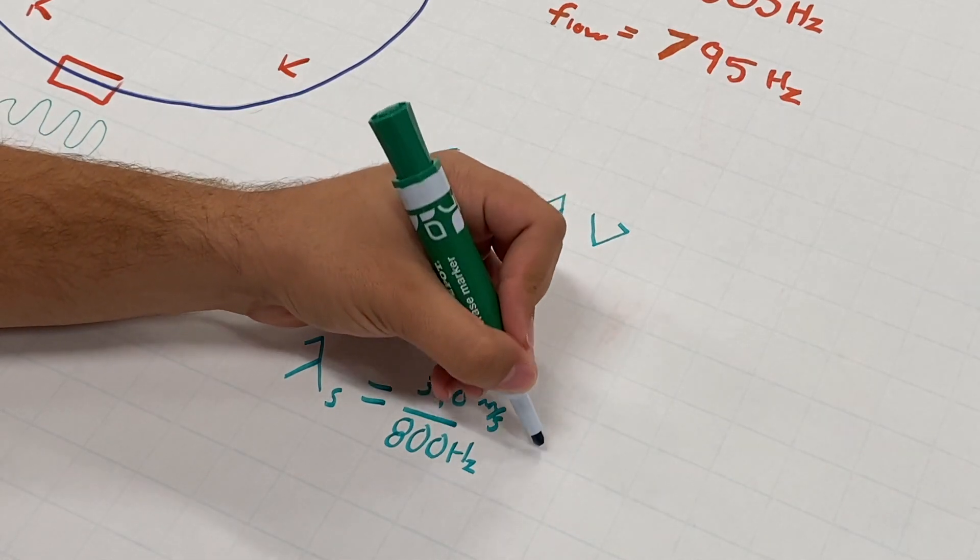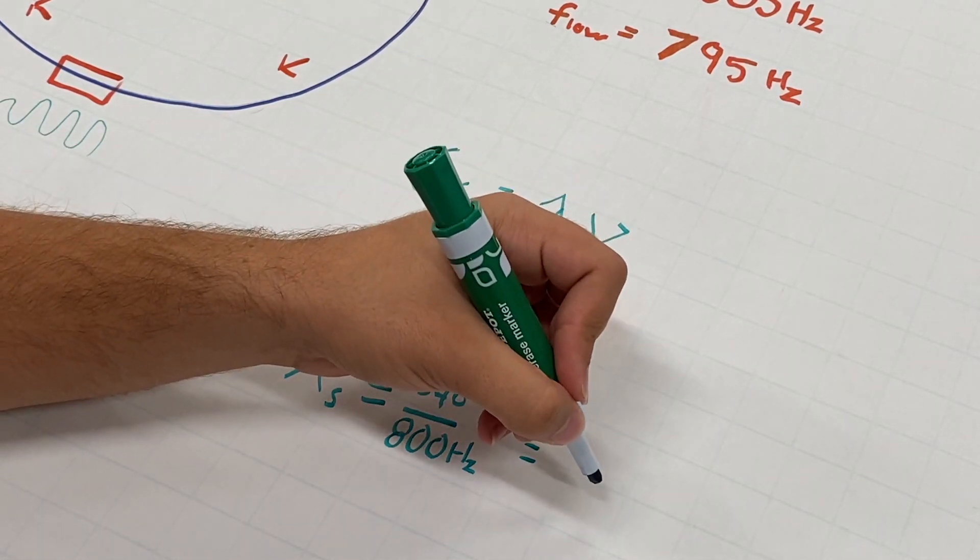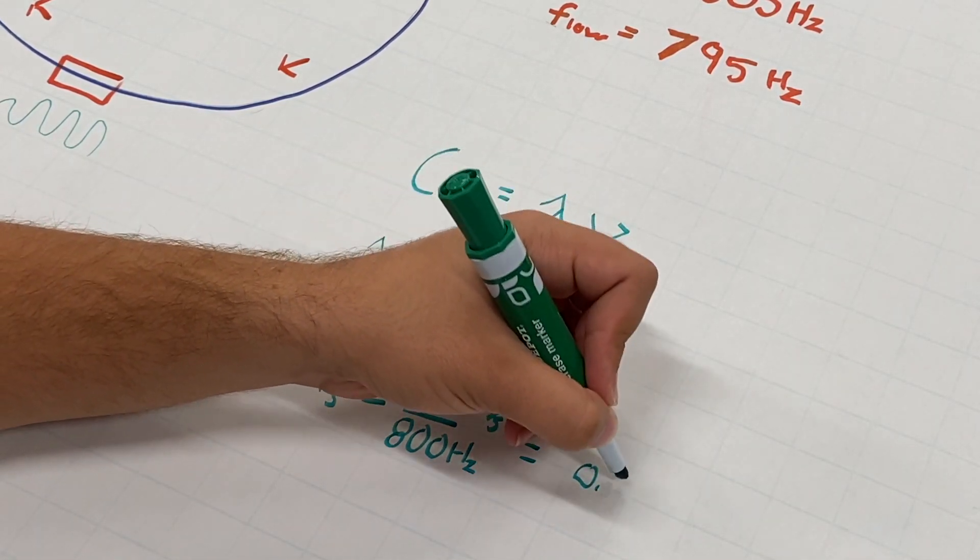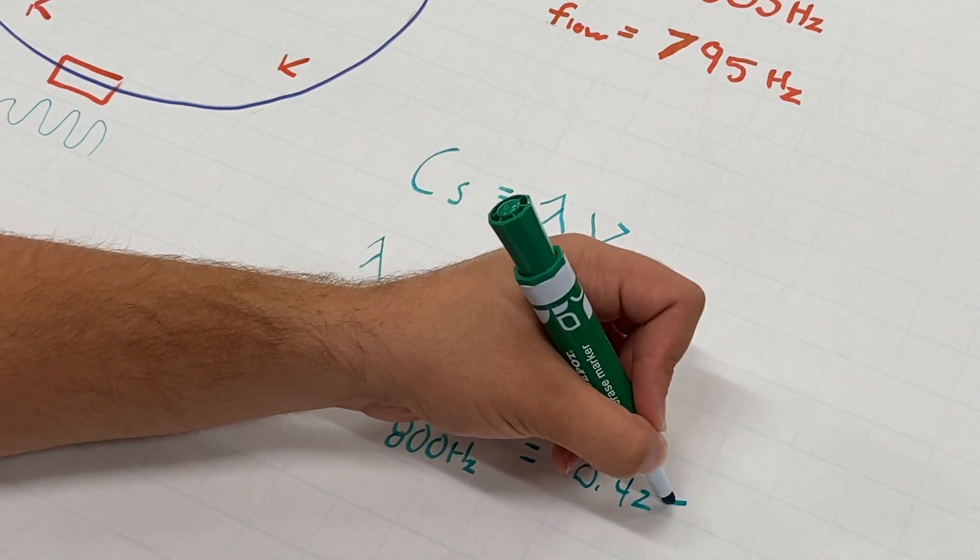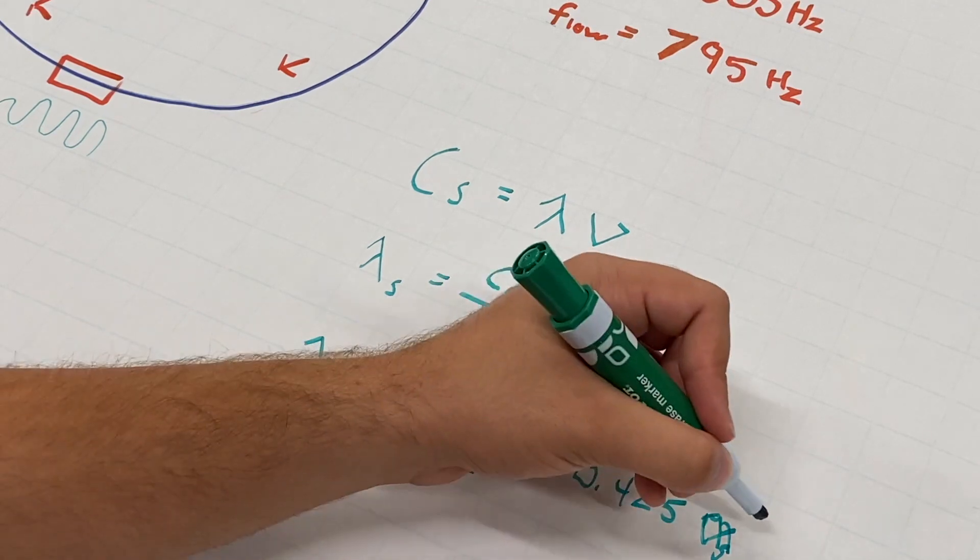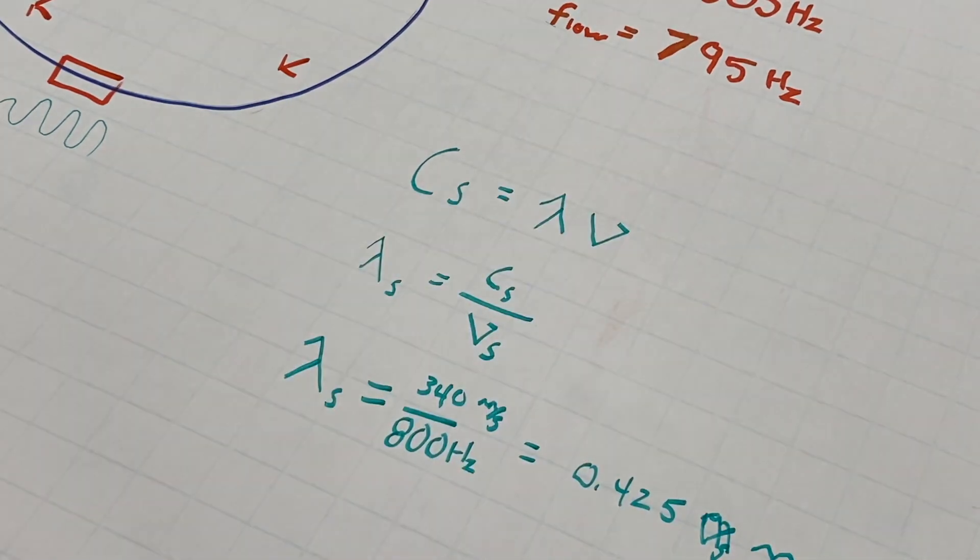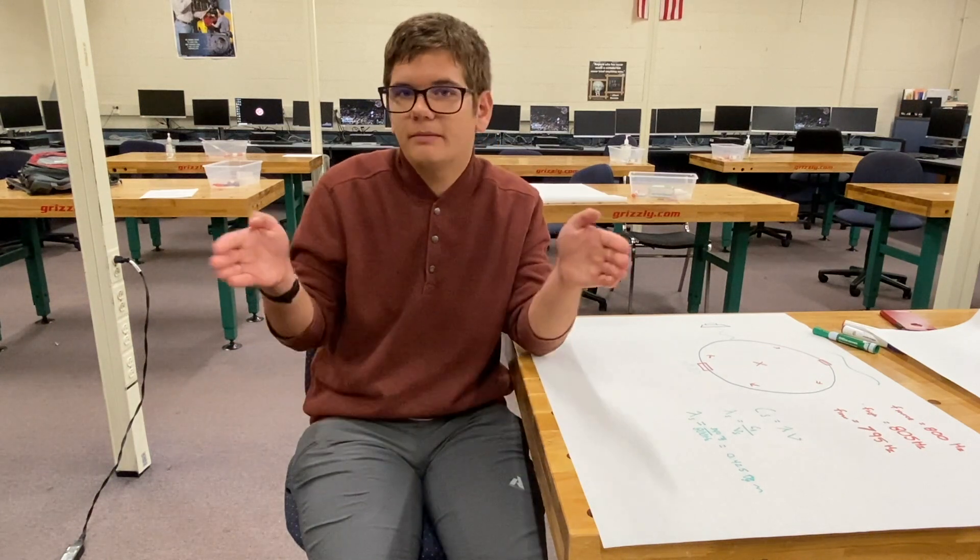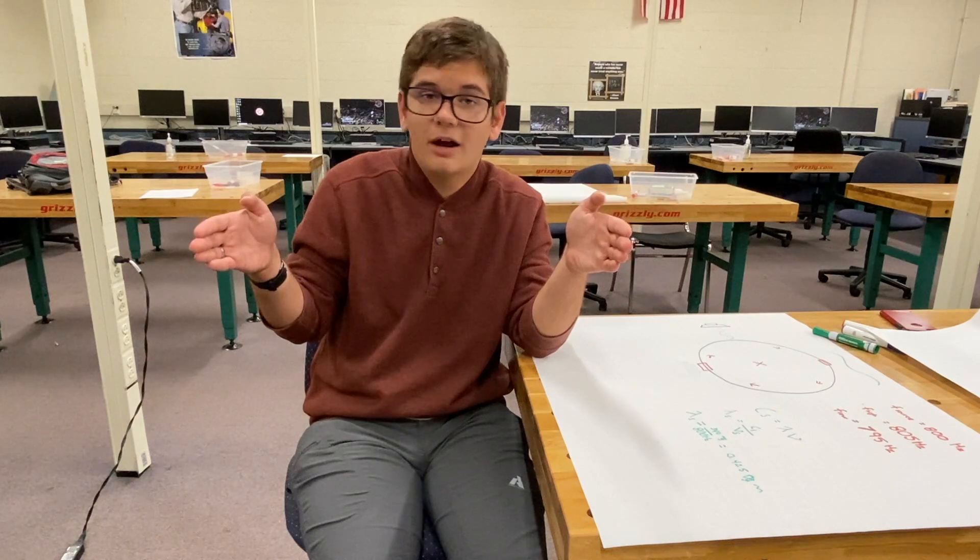After we do the calculation, we'll find that we get 0.425 meters. Using our equation and our source frequency of 800 hertz, we found that the wavelength is about half a meter. Are you surprised?